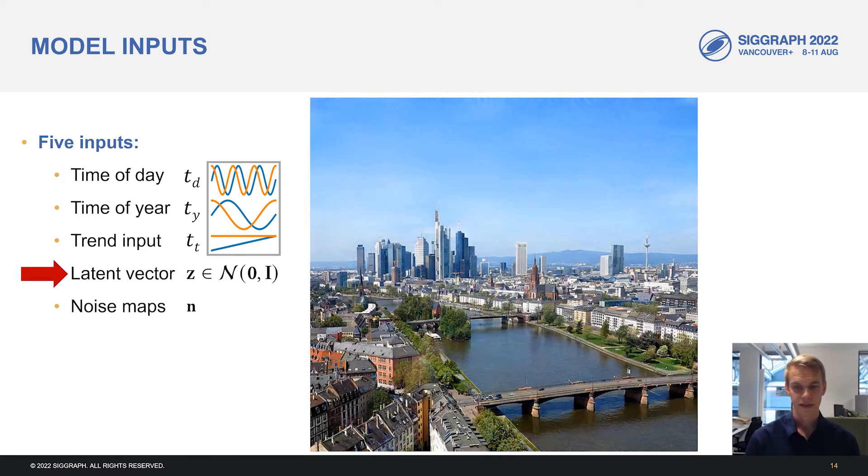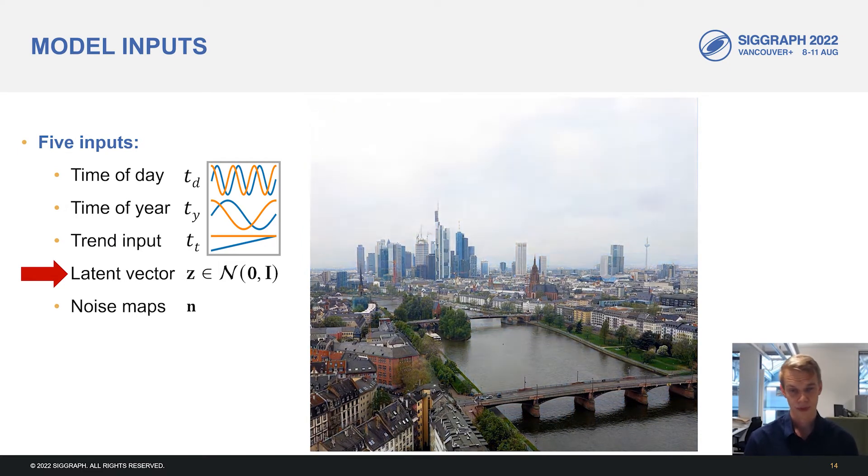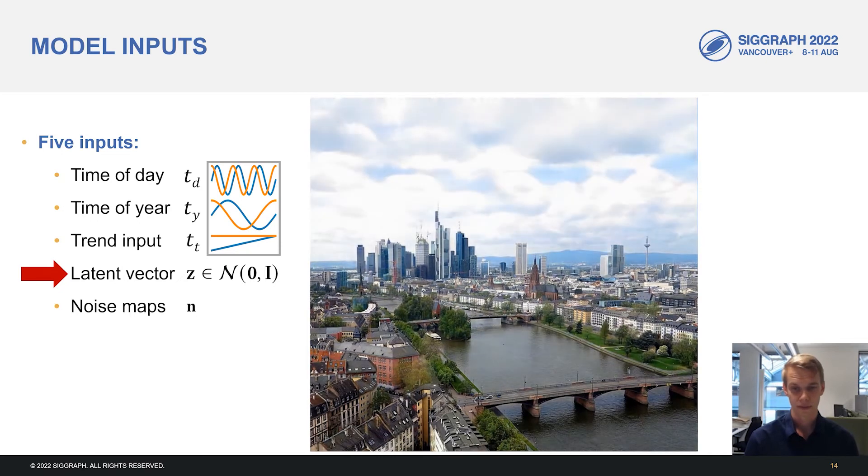Finally, the latent vector describes or defines the overall weather conditions and other random aspects of the image. And by interpolating from a clear latent vector to one that depicts rain, we can see the weather smoothly changing in the image. Or we can interpolate to a partly cloudy weather.